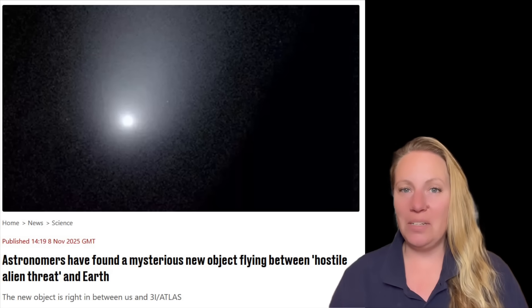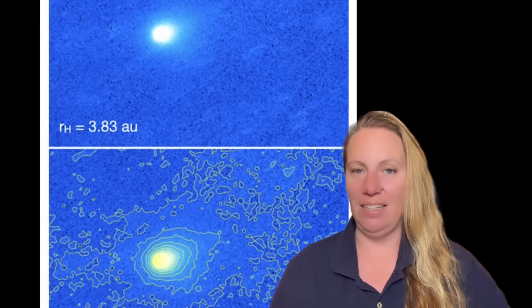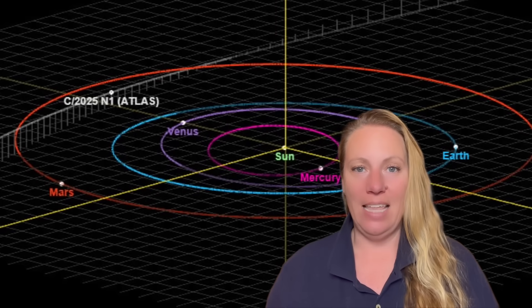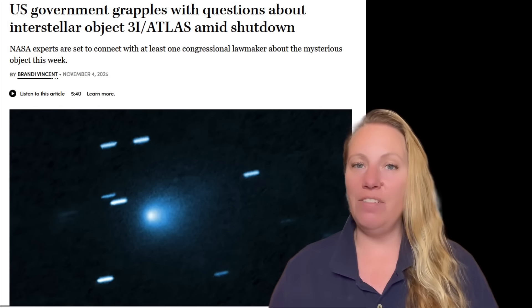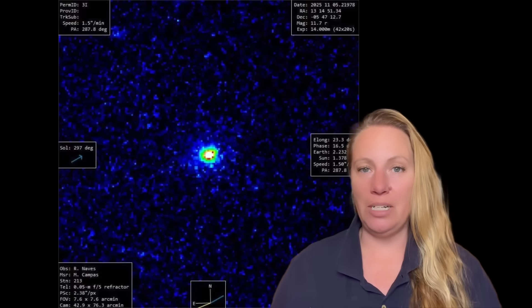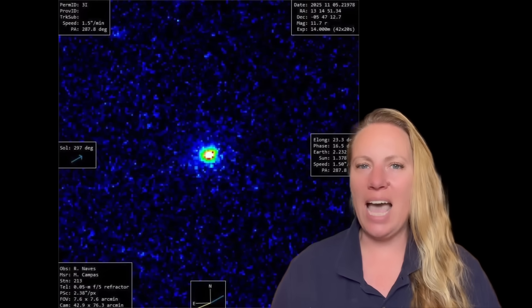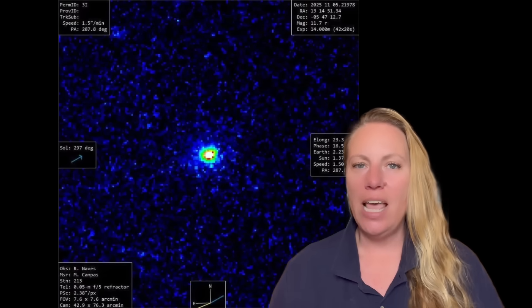This is to be determined what 3i/ATLAS is, but we have between 10 and 11 confirmed anomalies of 3i/ATLAS that are kind of strange. And it did have the chance if it was an alien spaceship, because there's some controversies in how it has accelerated that much, which could be a thrust engine.